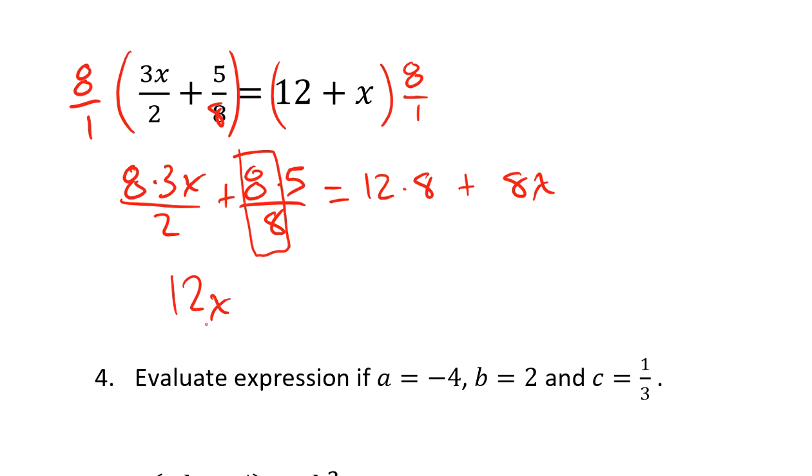And 3 times 8 is 24. 24 divided by 2 is also 12. So this equation becomes 12x plus 5 equals 4 times 8. I'm sorry, 12 times 8. That would be 80 plus 16 more, so that would be 96. So I've got 96 and then plus an 8x.